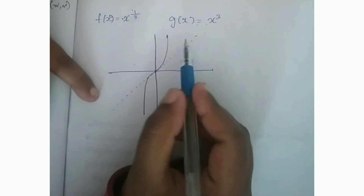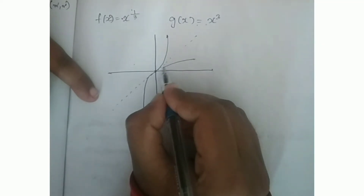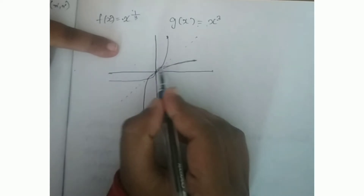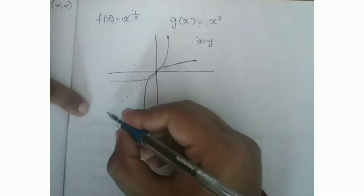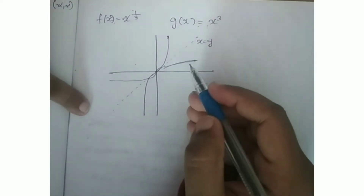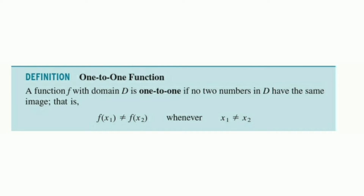We can see how the image appears here. We have a mirror along the line y equals x. The two graphs, x cubed and x raised to 1 by 3, are reflections of each other in this mirror. For example, the point 1,1 maps to itself since it lies on the line y equals x.